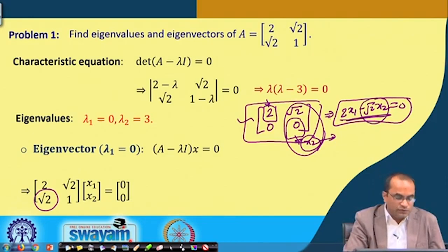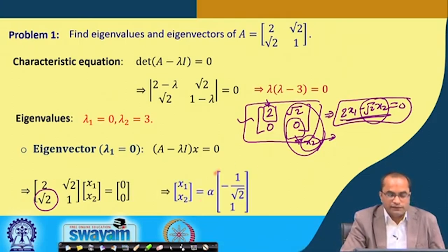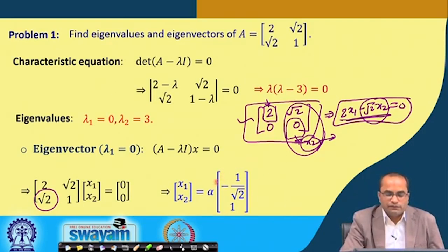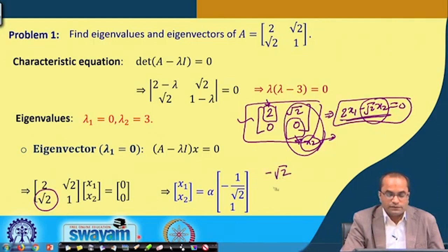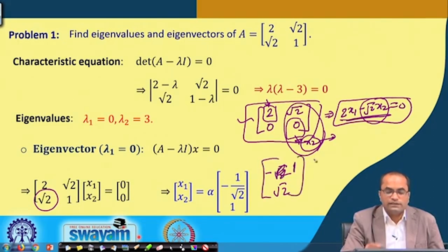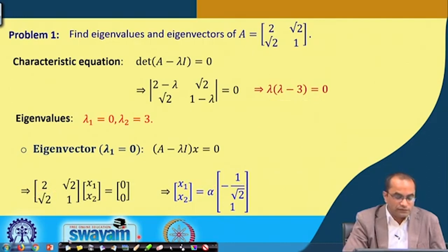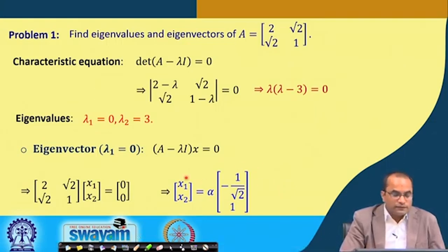We have the first equation: √2·x₁ + x₂ = 0 (equivalently 2x₁ − √2·x₂ = 0), with one free variable. We take x₂ as a free variable α; then x₁ = (1/√2)·α, or multiplying by √2, we can take the eigenvector as (−1, √2) or equivalently (1, −√2). Any scalar multiple of this is an eigenvector corresponding to λ₁ = 0.